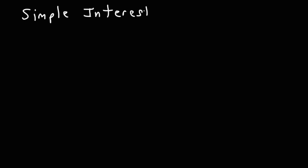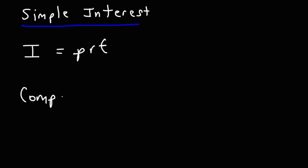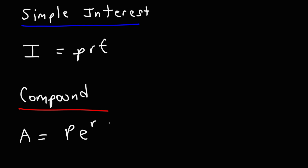Now the next thing we're going to talk about is the simple interest formula. There's simple interest and compound interest. Simple interest equals the principal times the annual interest rate times the time in years. For compound interest, the future value equals the principal times e raised to the interest rate times t, where t is in years.